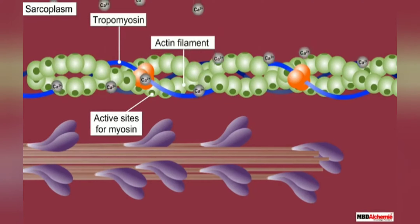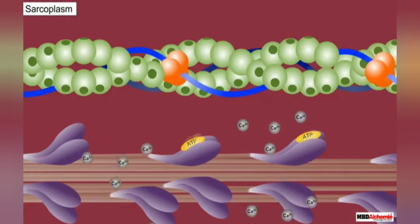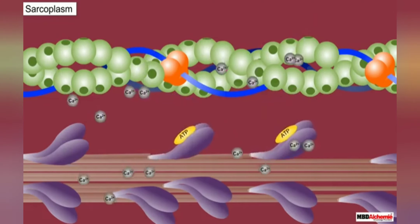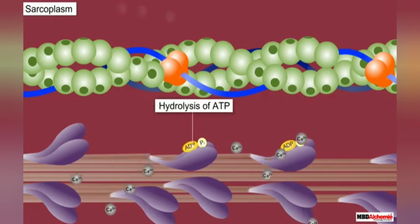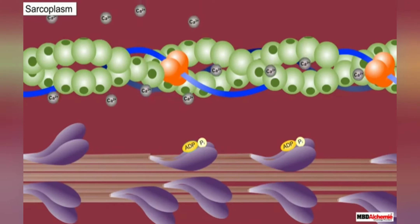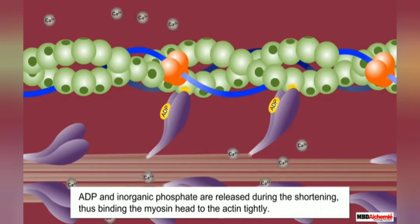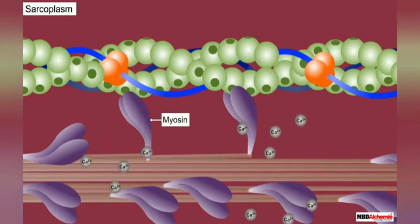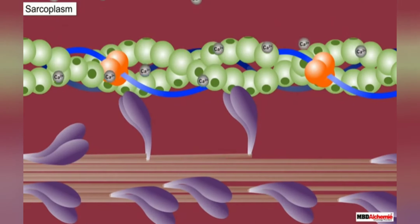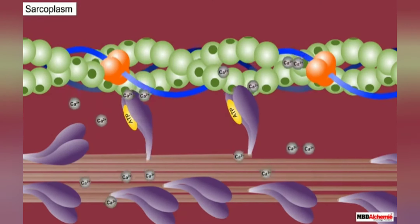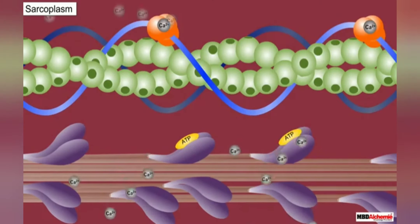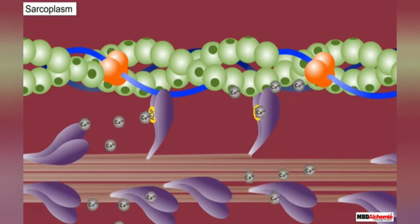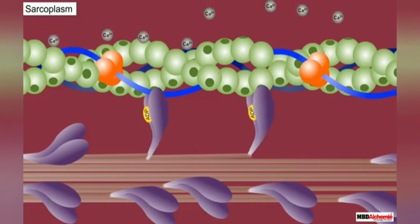Now, the head of myosin cleaves ATP — that is, ATP is broken down into ADP and phosphate is released — and myosin derives energy from this breakdown. Using this energy, myosin gets attached to the uncovered active site of actin, resulting in the formation of the actomyosin complex. The myosin heads are then tilted backwards and pull the attached actin filament inwardly, resulting in contraction of the muscle fibers.